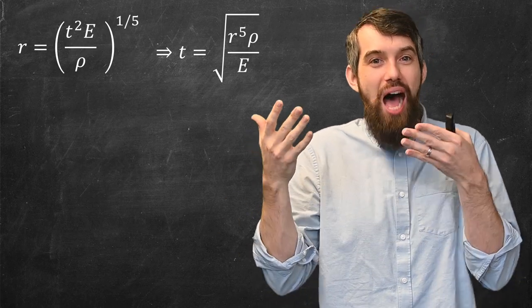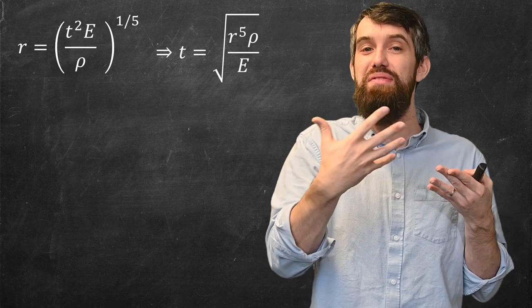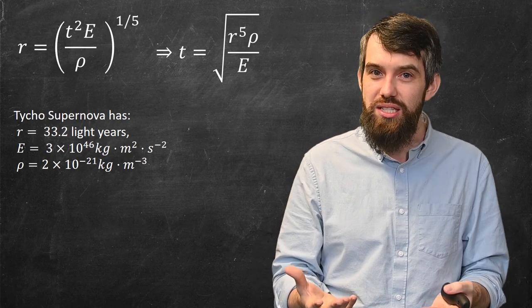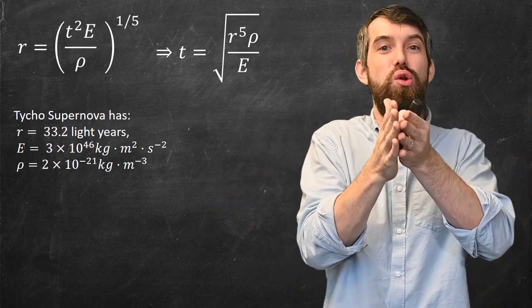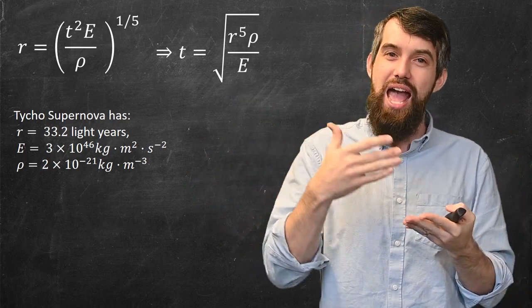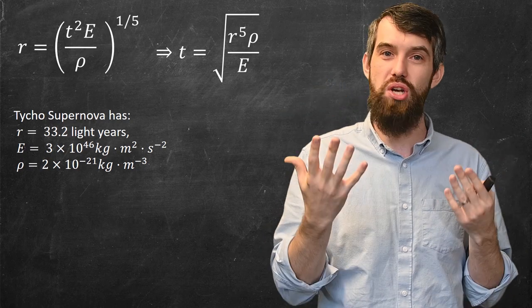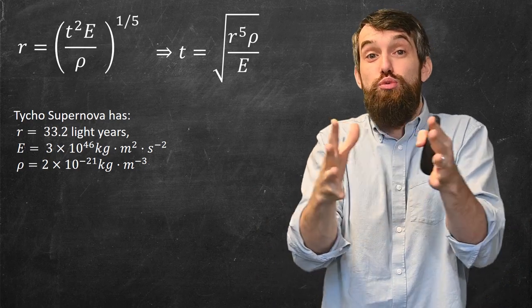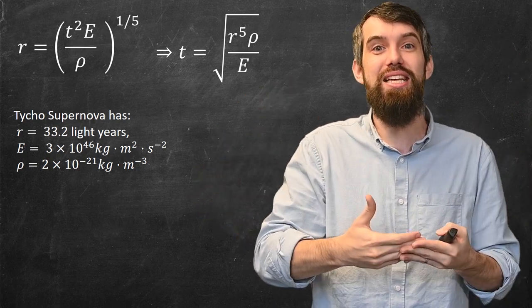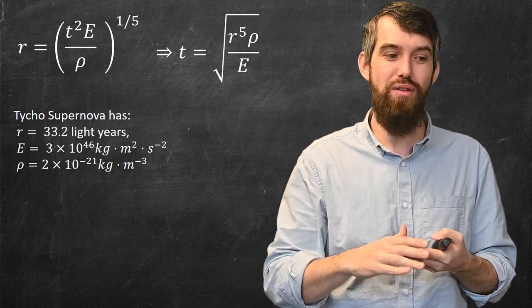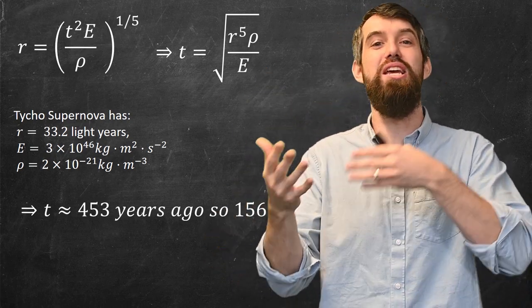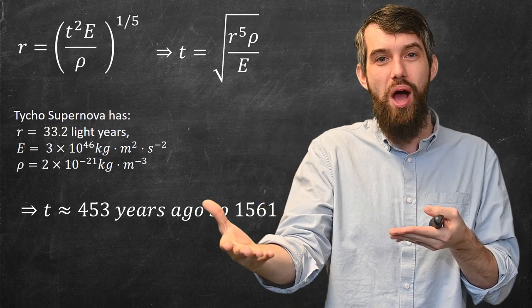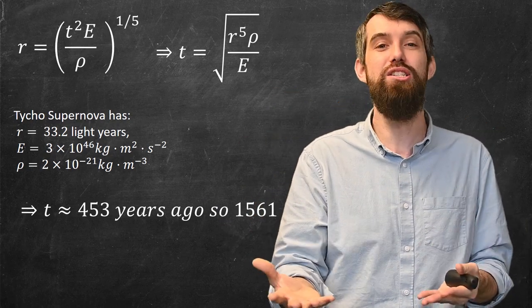Indeed, many of these constants are things that astronomers can go in and compute. So the radius is known, it's sort of 33 light years, so this enormously large explosion. The energy is, of course, enormous. We're talking about an exploding star, so there's estimates for how big that energy is. And likewise, the density, because it's a star but now spread out over 33 light years, the density is extremely small. So nevertheless, we have these three constants, you can plug them in, and this data was taken a few years ago, so if you get 453 years and subtract it from when this data was taken, you get 1561 as the year when the supernova allegedly exploded.